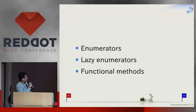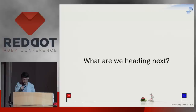For functional programming, we have enumerators and lazy enumerators, and we have added some functional methods inspired by functional programming. So in 2015, we are in the process of evolution. Where are we heading next?